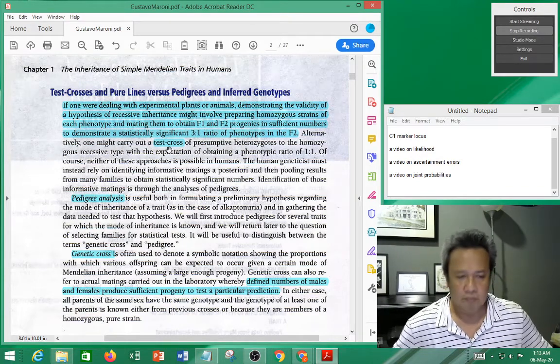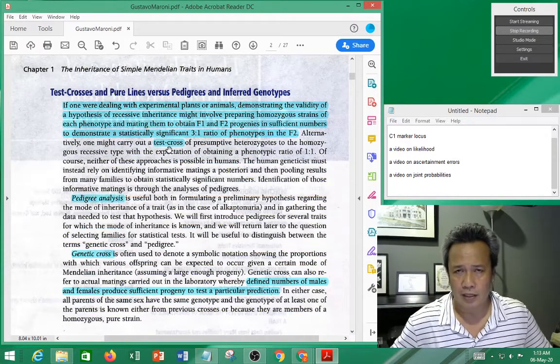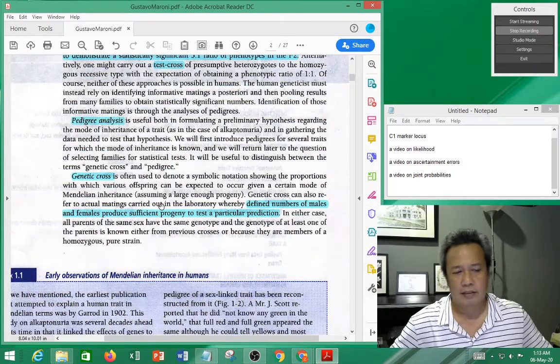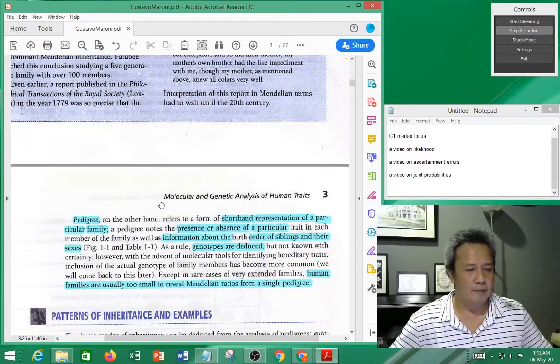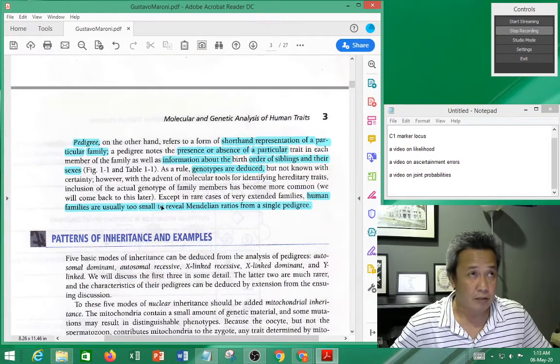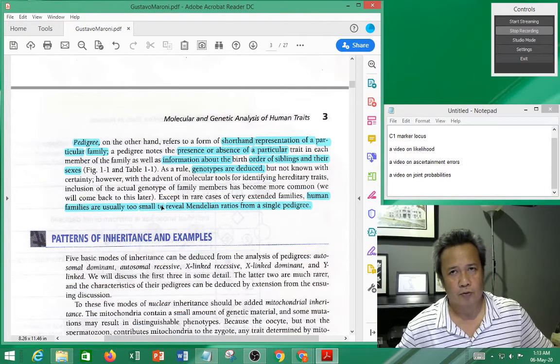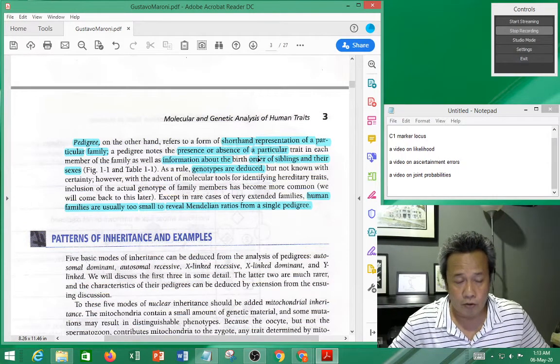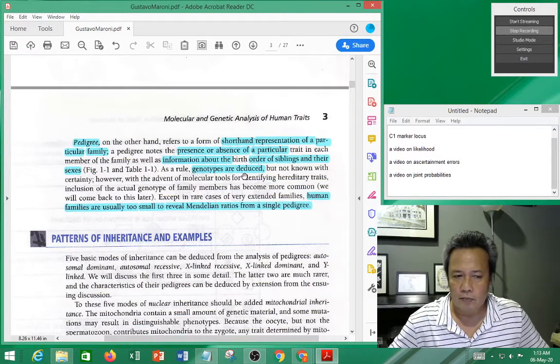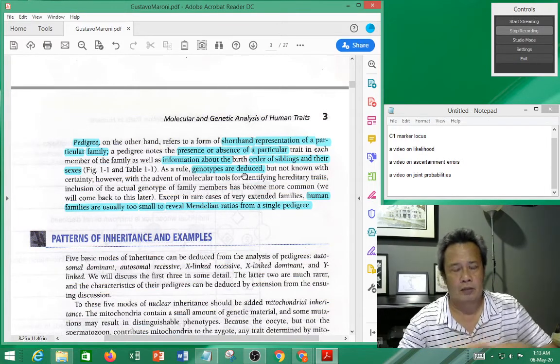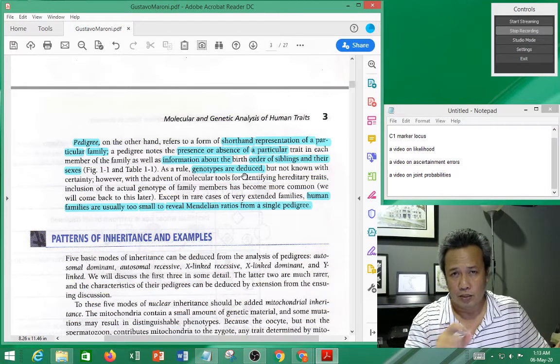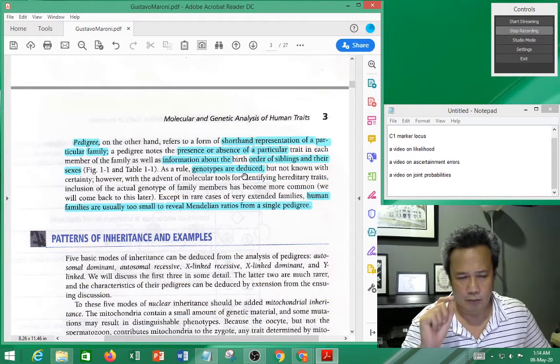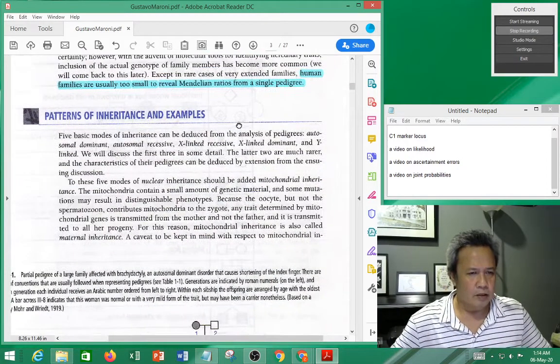You have a hypothesis and then you test it out. But for human genetics we cannot do that. You need to be able to distinguish between pedigree analysis and genetic cross. Pedigree analysis is a shorthand representation that shows the presence or absence of a particular trait you're looking for, and then the genotypes are deduced. Of course nowadays you can do molecular typing, but essentially when you do pedigree analysis you deduce it just by looking. Remember I mentioned the tutorial on pedigree, I will have some points I want to go on that one in a bit.